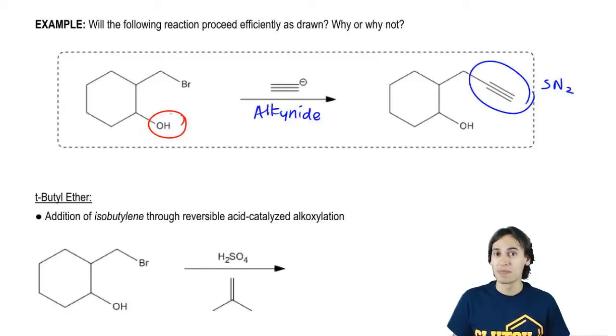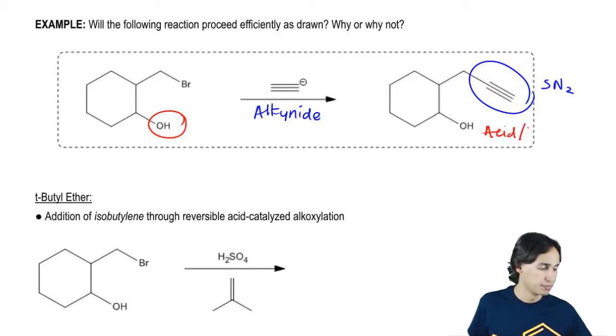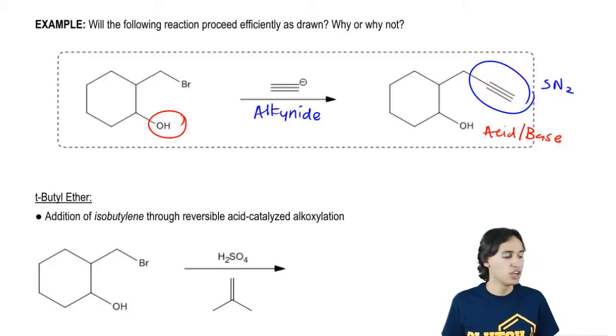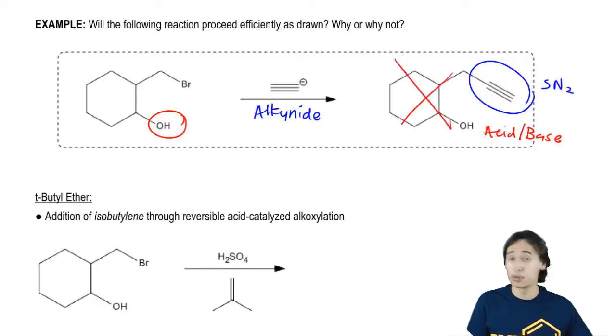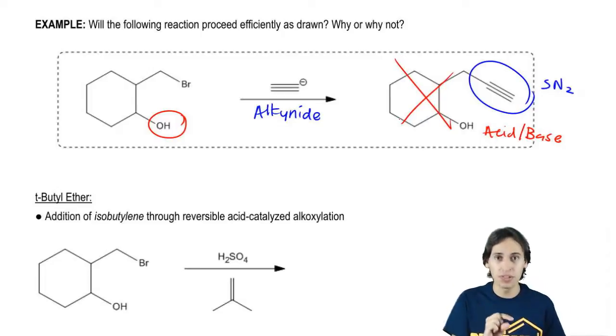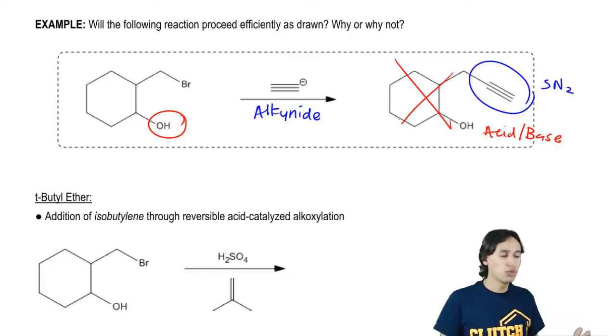But notice that there's that other functional group of the molecule, the alcohol. Can alcohols react with alkynides? Actually yes. And they react through a different mechanism. They react through an acid base mechanism. Because we know that alcohols have an acidic proton and alkynides are very strong bases. So it turns out that this reaction will not proceed to completion. In fact, the alkynide will almost exclusively react with the OH and it will pretty much not react at all with the alkyl halide. So if I do want this reaction to happen, is there any way to make it only react with the alkyl halide and not the alcohol?